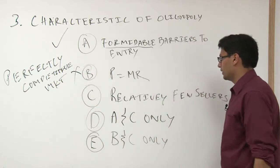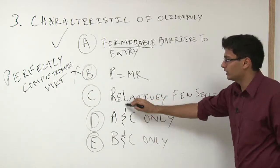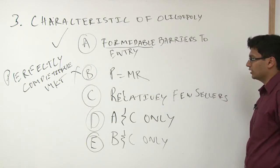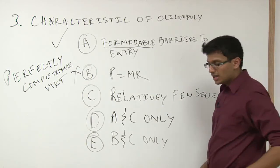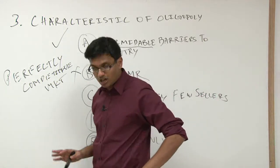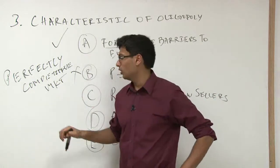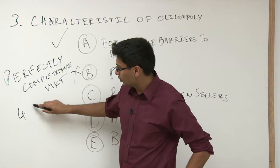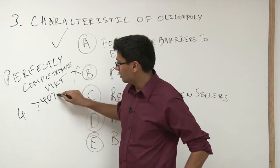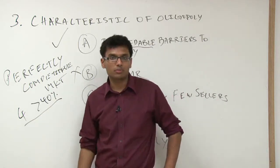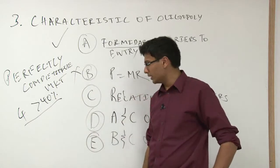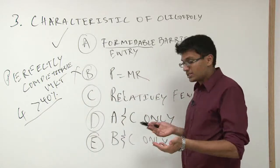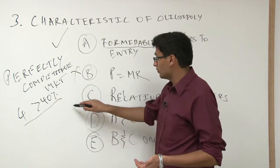C, they have relatively few sellers. That's sort of true, right? I mean, oligopoly, if you think about it, we talked about the concentration ratio. We said, if four firms or less have greater than 40% market share, we call that an oligopoly. So it's true, there are a few sellers. So C to me sort of looks true.